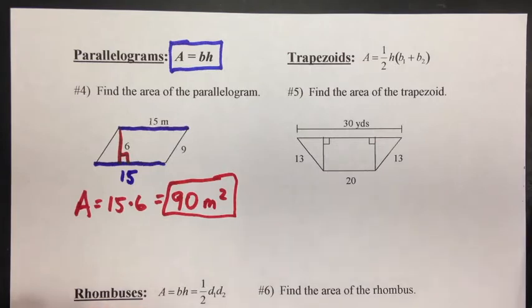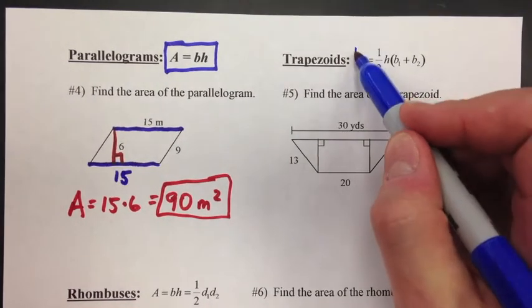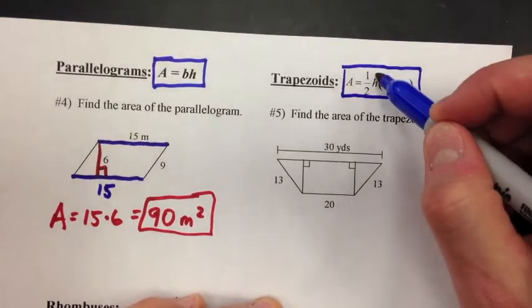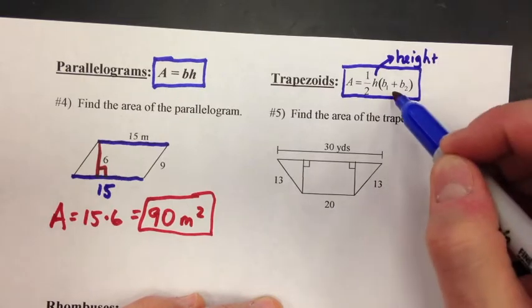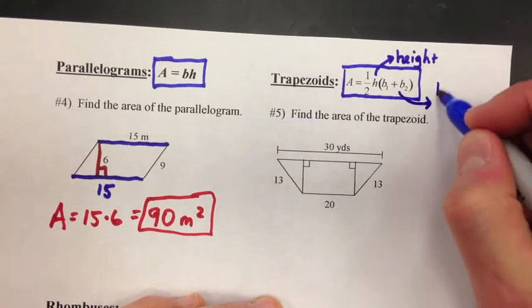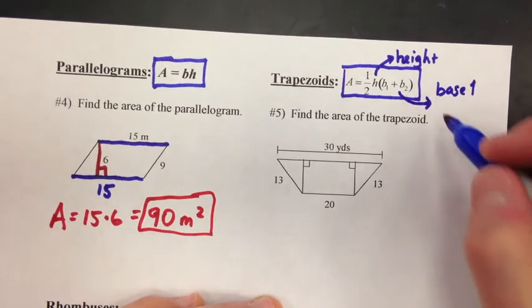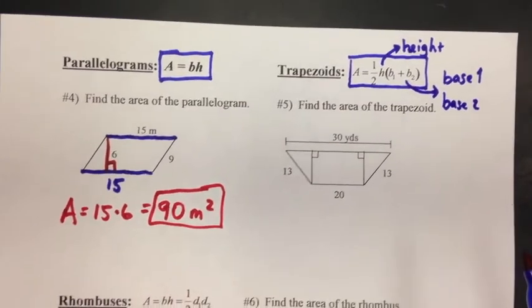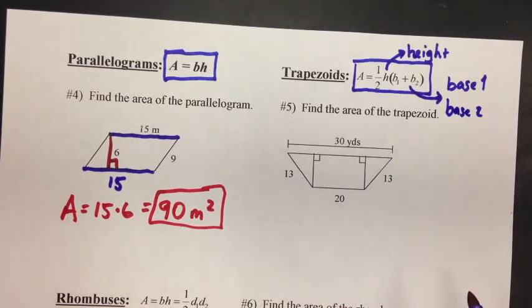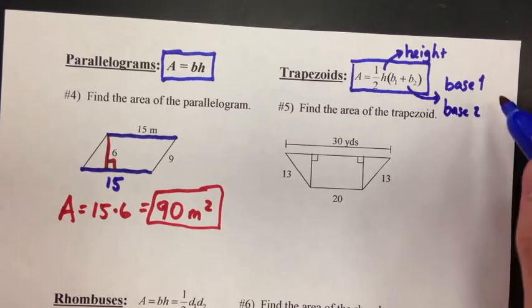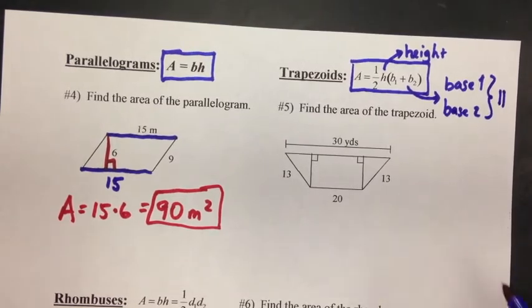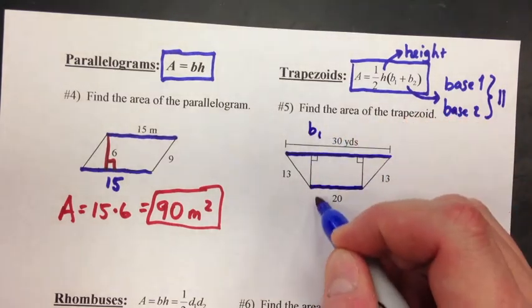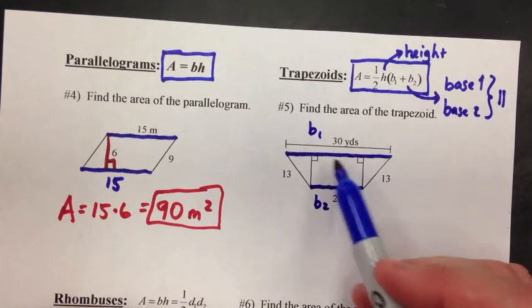Now number five: find the area of the trapezoid. Here's the formula for a trapezoid, and this looks kind of confusing. H is height, and then you have B1 and B2 — base 1 and base 2. The bases are the parallel sides. So base 1 and base 2 are the sides that are parallel to each other. In this case, it's the top and the bottom. It doesn't matter which one is base 1 and which one is base 2 — they're the two parallel sides.